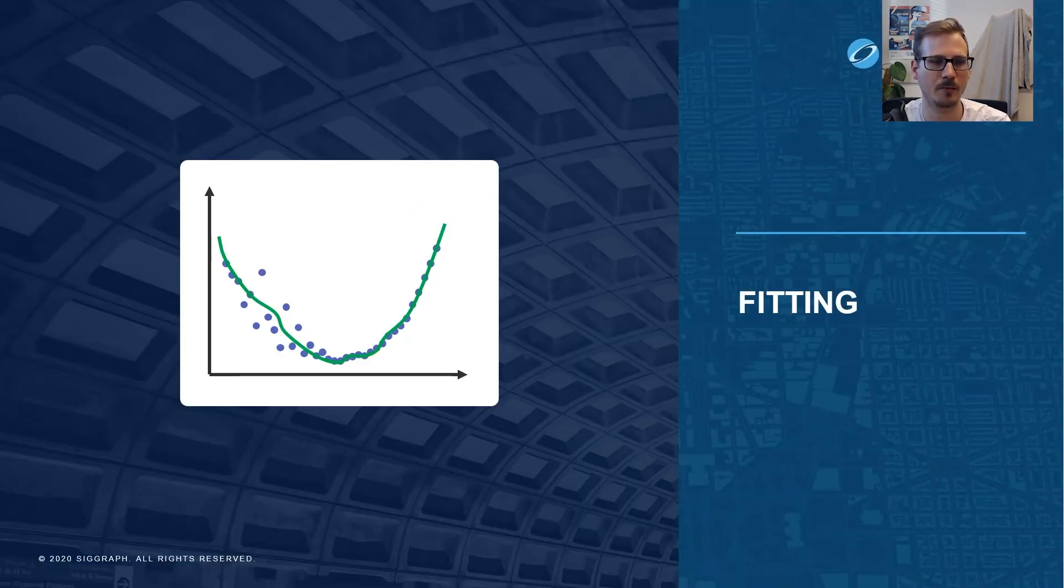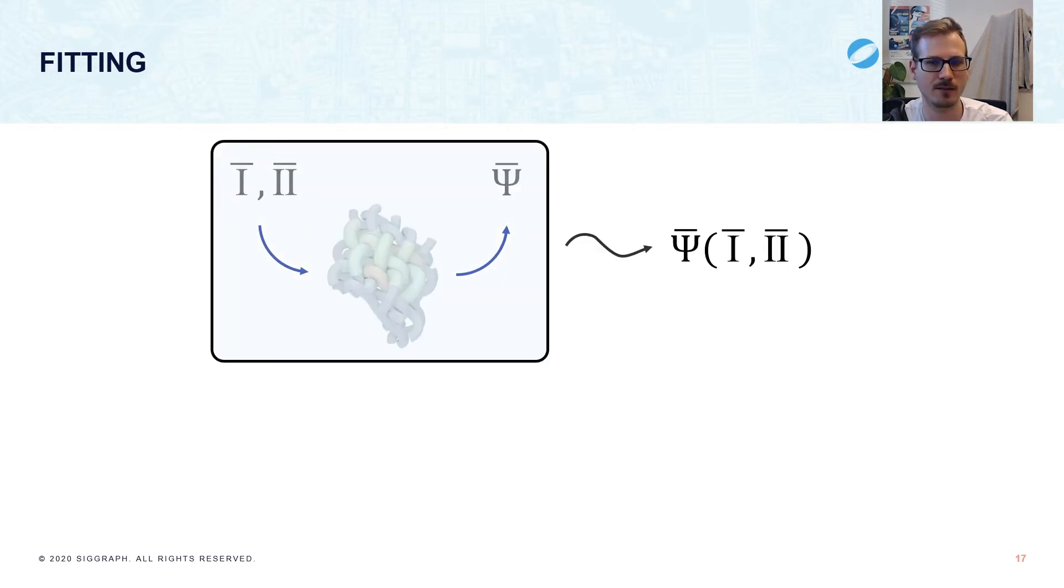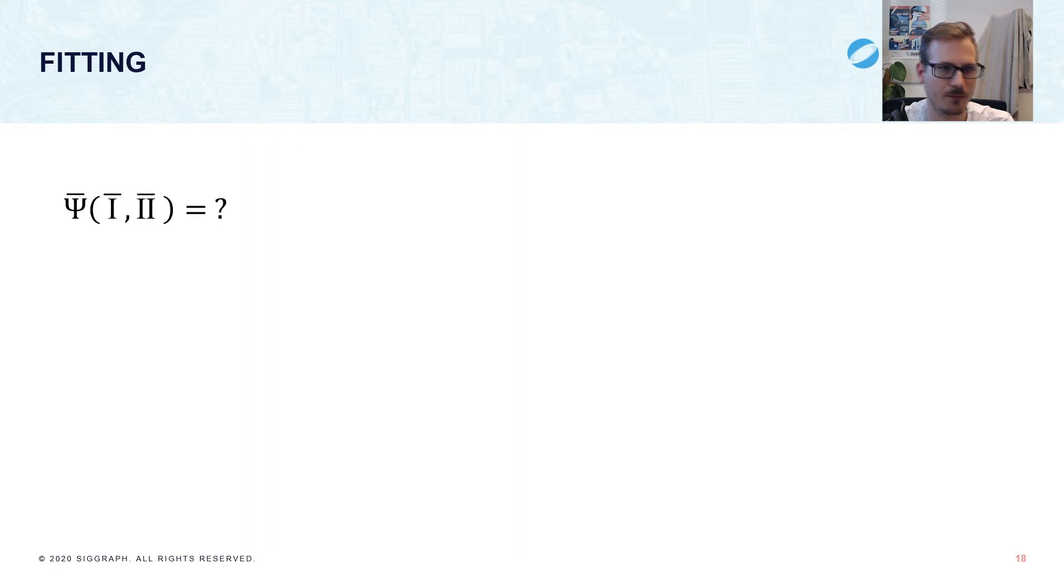This brings us to fitting an energy from these simulations. In a sense, psi bar is a complicated function, and evaluating it requires a small simulation. For cloth simulation, we need to evaluate its derivatives at every time step for each triangle of a mesh. To make this tractable, we first want to convert this function into something that is easier to evaluate. We do this by pre-computing data from lots of deformations and fitting the coefficients of a parametrized model.